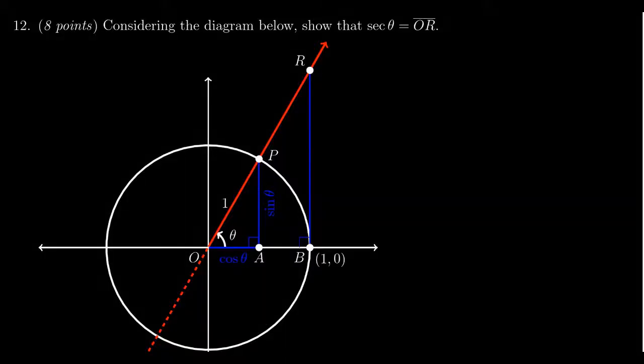Consider the following diagram. We have the unit circle illustrated here, with a ray emanating from the origin that forms an angle, which we're going to call theta.